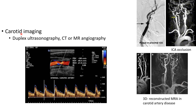Carotid imaging should be done. The various options include duplex ultrasonography, CT or MR angiography. This is normal carotid duplex ultrasonography. These are angiography images showing block in proximal internal carotid artery and internal carotid artery occlusion. This is 3D reconstructed MR angiography in carotid artery disease.